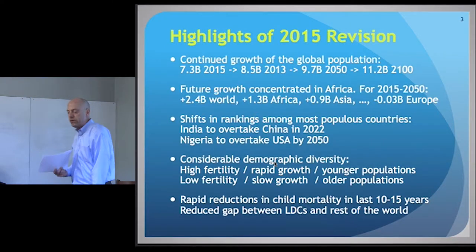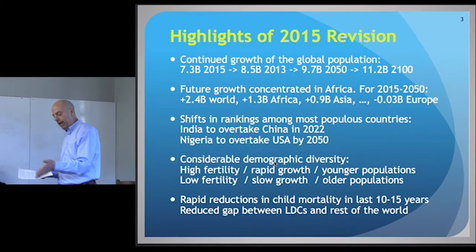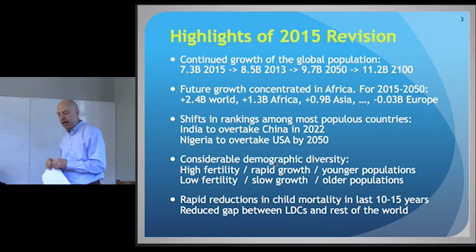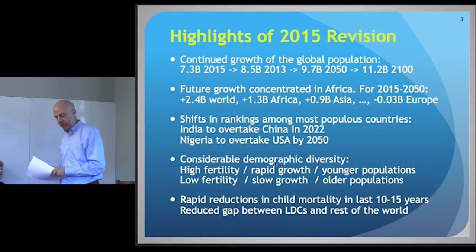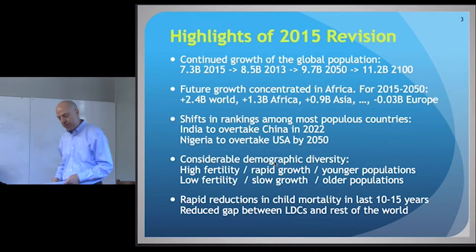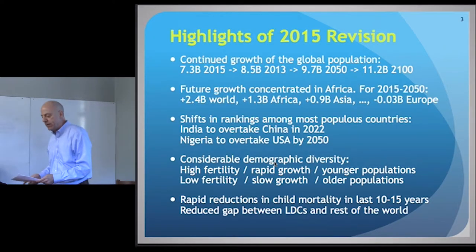The other lines correspond to probabilistic prediction intervals with 80% and 95% total probability, or the alternative variants constructed by varying the fertility assumption by plus or minus half a child from the medium variant. The second key point is that future growth is concentrated very heavily in Africa. The total growth between now and 2050 is expected to be about 2.4 billion, of which more than half — 1.3 billion — will occur in Africa, and almost a billion in Asia.